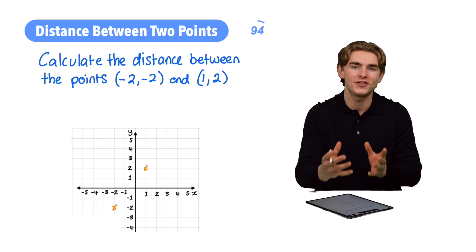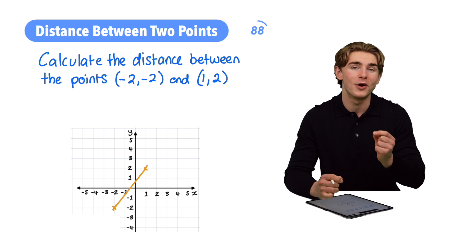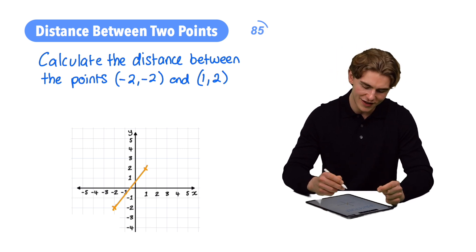Now, how are we going to work out the distance between these two points? Let's firstly join them with a line, because that's going to be the distance we're looking for. How can we work this out? We're actually going to draw a right-angled triangle, which looks like this.